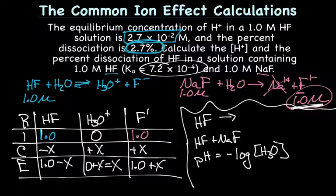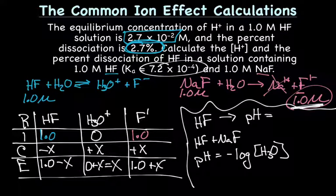So the pH for HF would be about 1.57. And the pH in a solution containing both HF and NaF is 3.92.